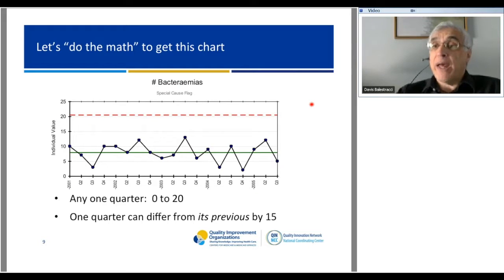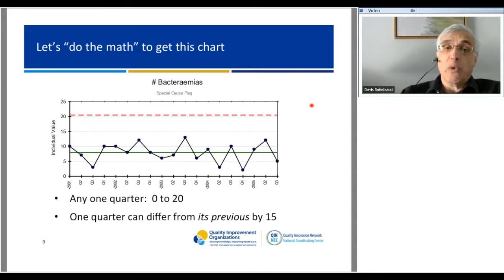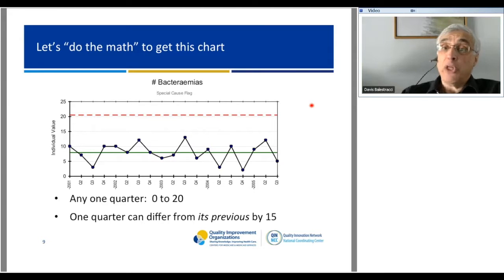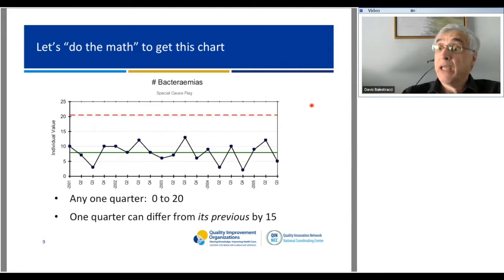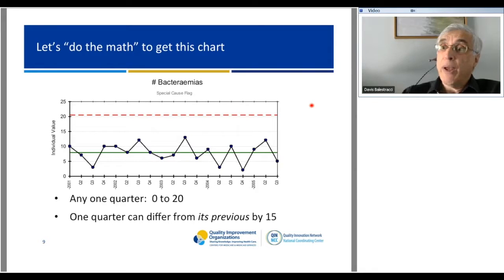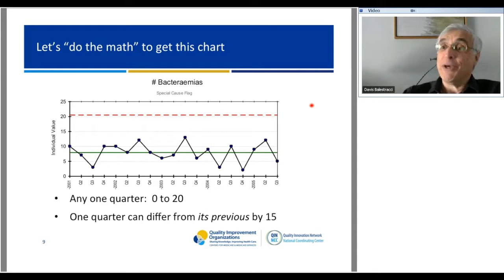This process is perfectly designed so that in any one quarter, even though we're averaging eight, you're not going to get exactly eight—you'll get a number between zero and 20. One quarter can differ from its previous quarter by as many as 15. You might say, 'That's out of control, we don't like that.' Well, I don't like it either, but despite how much variation you see, or how out of control it seems, it could very well be in control, and we can deal with it.